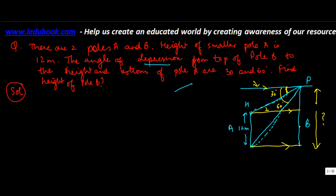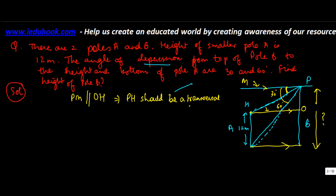Let's call the horizontal from P as M, and let's call the top of pole A as H, and the base point as O. Since PM is parallel to OH, and PH is a transversal cutting two parallel lines, angle PHO is equal to angle HPM, which is 30 degrees — these are alternate angles.